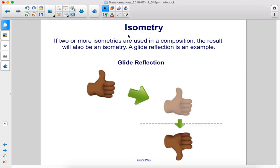If two or more isometries are used in a composition, the result will also be an isometry. A glide reflection is an example.